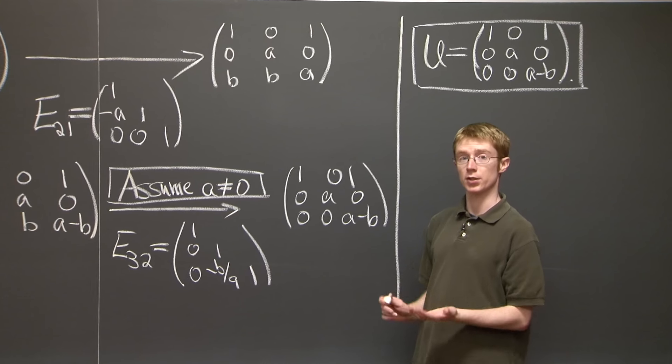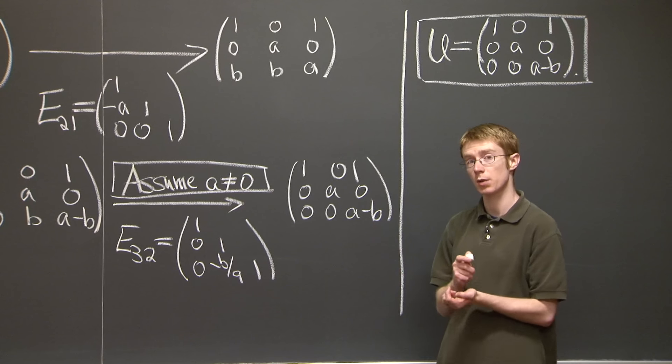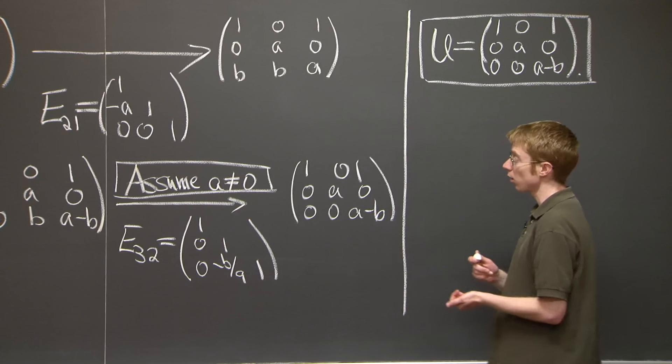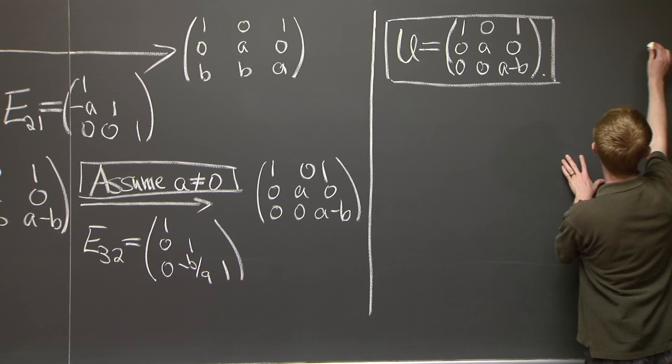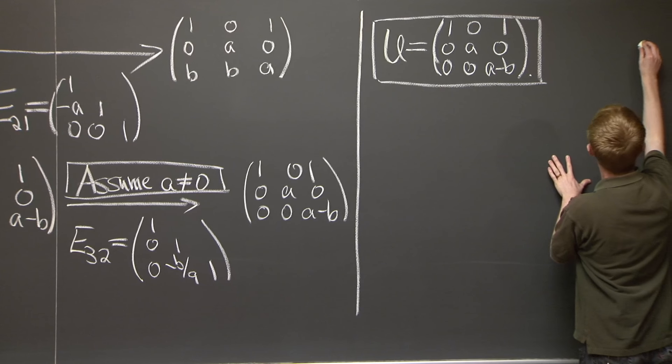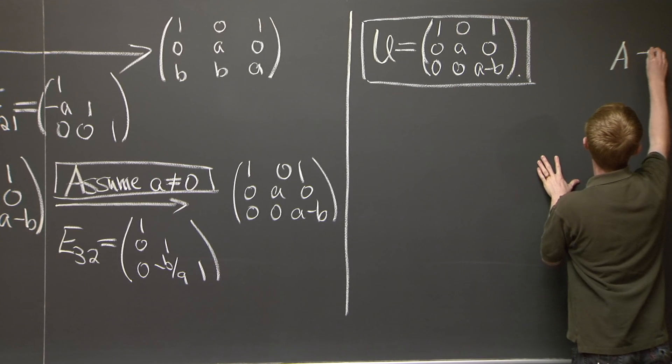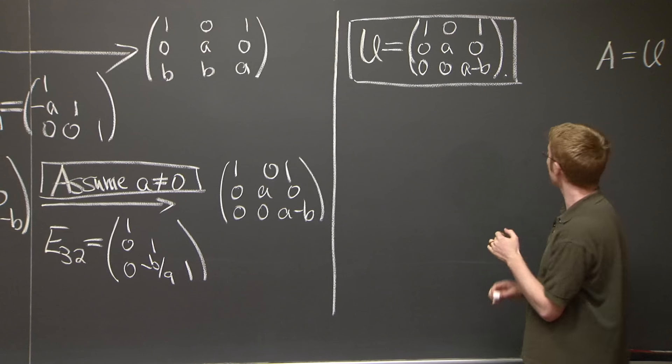Now we have to find our L matrix. And we need to use these elimination matrices that we've been recording along the way in order to do that. OK. So remember that we started with A, and we got U.